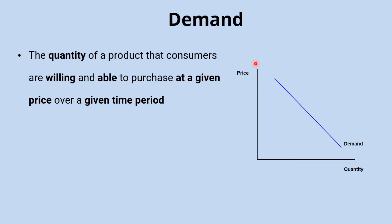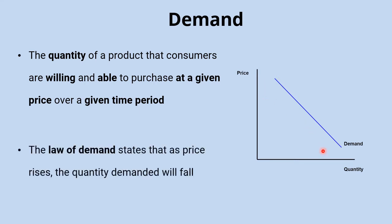We plot price on our y-axis and quantity on our x-axis, and then we sketch this relationship showing the relationship between the price of a product and the quantity that will be demanded. The law of demand says that as price rises, quantity demanded will fall.